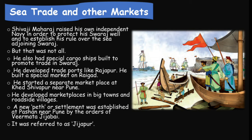Sea trade and other markets: Shivaji Maharaj raised his own independent navy in order to protect his Swaraj, its wealth, and to establish his rule over the sea adjoining Swaraj. He also had special cargo ships built to promote trade. He developed trade forts like Rajapura and built a special market on Raigad. He started a separate marketplace at Khed Shivapura near Pune. He developed marketplaces in big towns and roadside villages. A new settlement was established at Pashan near Pune by the order of Mata Jijabai, and it was referred to as Jijapura.